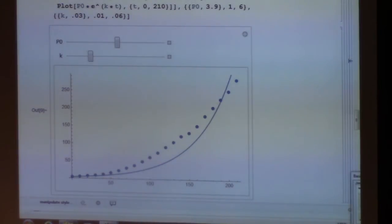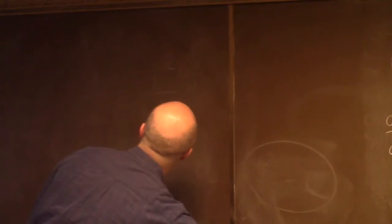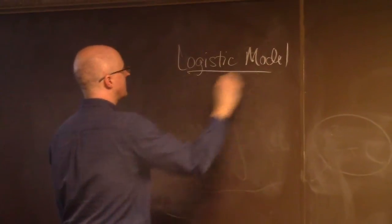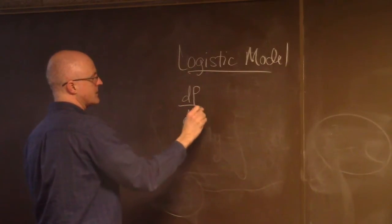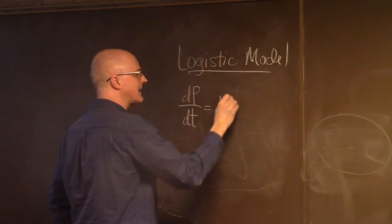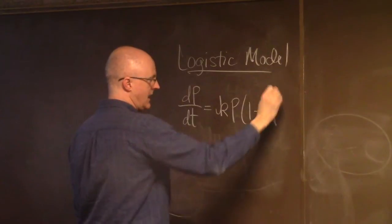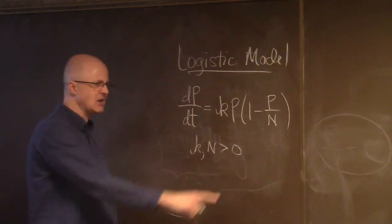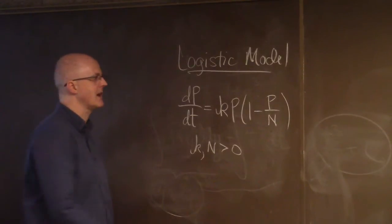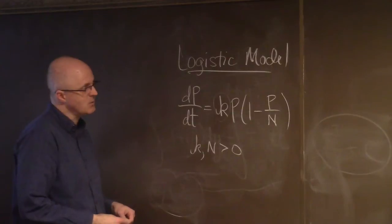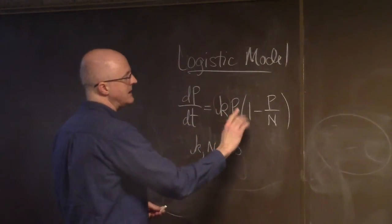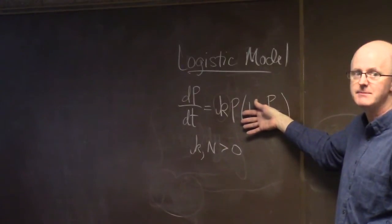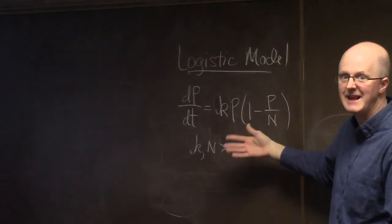Let's recall what a logistic model is. dP/dt = K · P · (1 − P/N), where K and N are both positive constants. N is called the carrying capacity. K is like a relative growth rate when P is small—when P is close to zero, the factor (1 − P/N) is close to one, so essentially the model is approximately exponential when P is small. K is like a relative growth rate at the beginning.